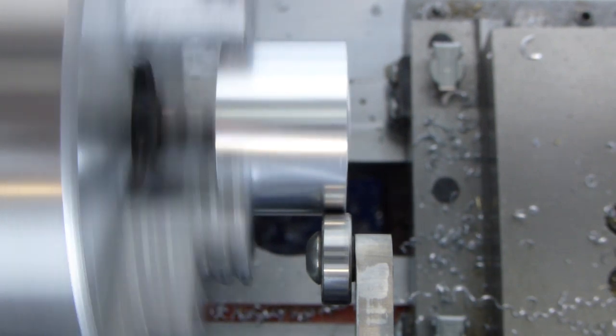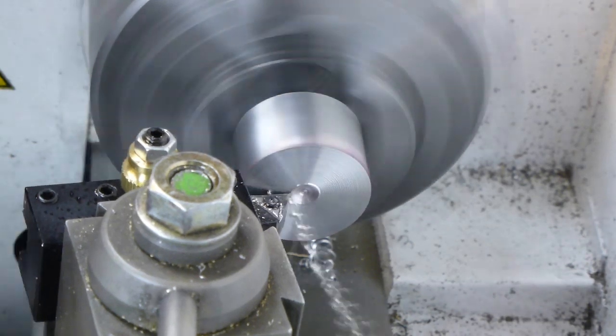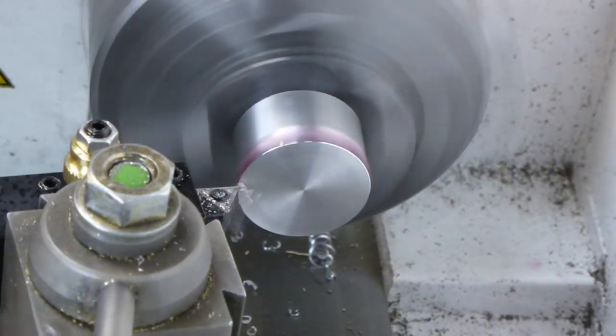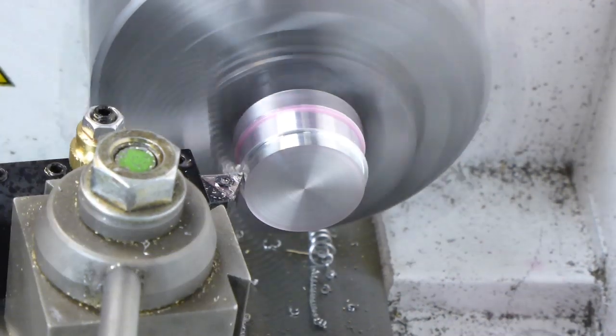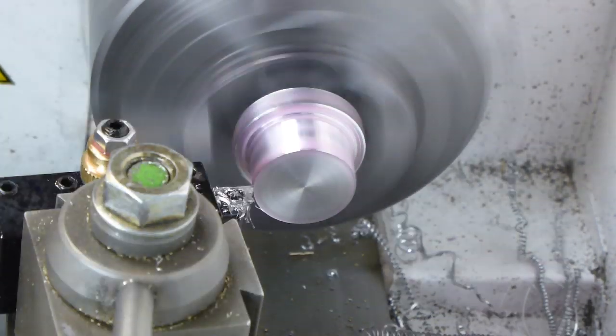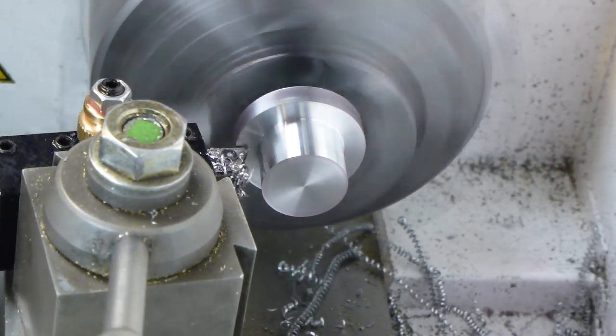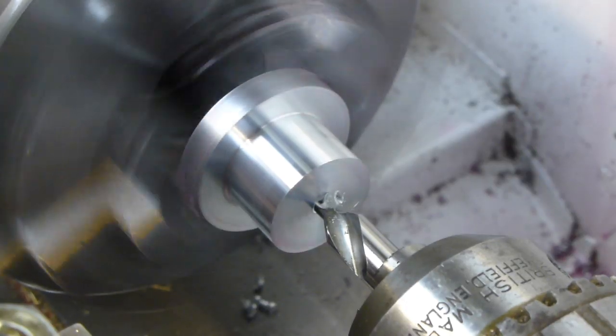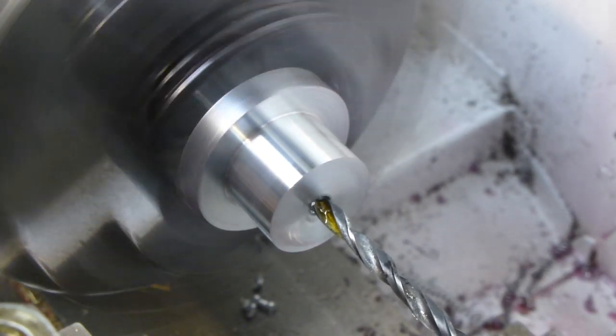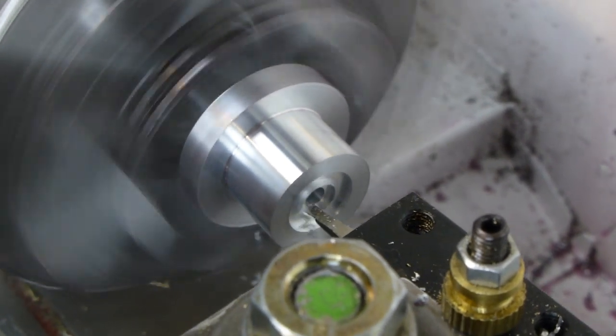After truing up with the bearing tool, I faced the end and reduced the diameter to that of the conrod, keeping the cuts nice and light to keep it from flying out of the chuck. I drilled the centre to take an M4 screw and then cut a recess to accept the end of the syringe plunger.